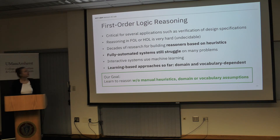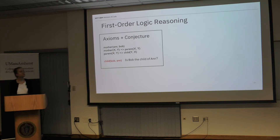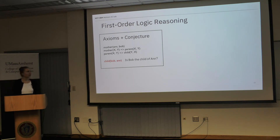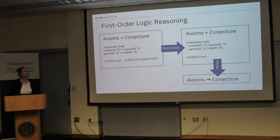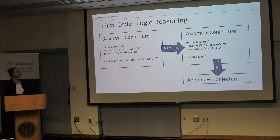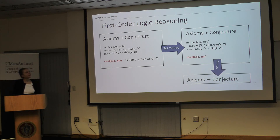In logical reasoning you are given a set of axioms — formulas assumed to be true — and a conjecture, which you want to prove or refute. You can normalize axioms into a disjunction of conjunctions of clauses. For example, the rule 'for all X and Y, if X is the mother of Y then X is the parent of Y' can be expressed as: either X is not the mother of Y, or X is also the parent of Y.